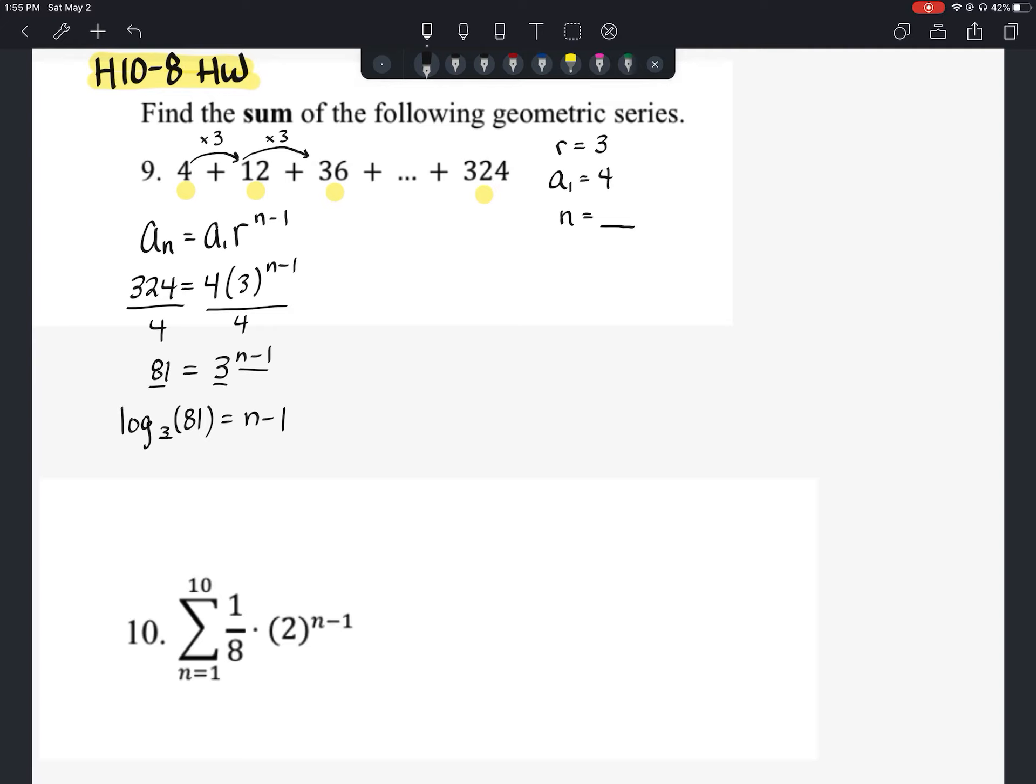Log base 3 of 81 we should know is 4. 4 is equal to n minus 1. So we'll add 1 and we know that there are 5 terms in this series.